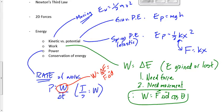The biggest thing we did here is conservation of energy. We spent more time on conservation of energy than on any of the other topics. What we really mean is conservation of mechanical energy — mechanical energy being the sum of kinetic and potential energy. What we're saying is that kinetic and potential energy combined are conserved. We may lose kinetic energy, we may lose potential energy, but combined the total stays the same. So if we lose kinetic, we gain potential, and if we lose potential, we gain kinetic.